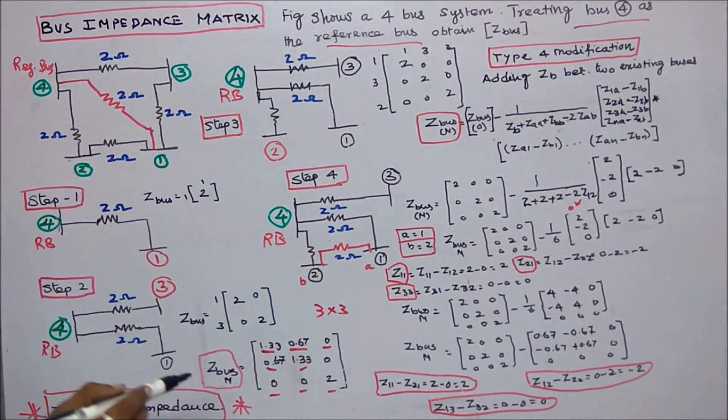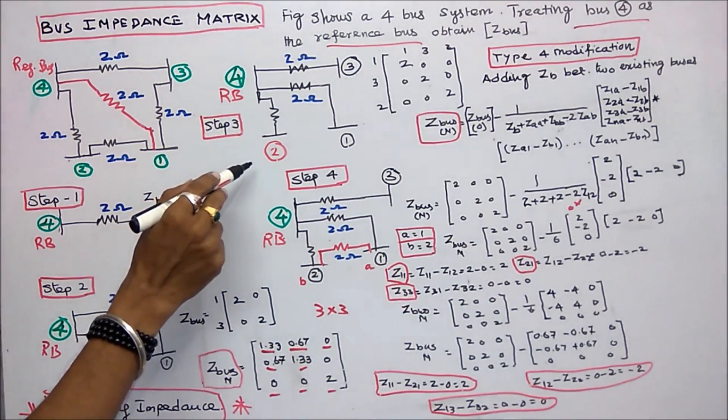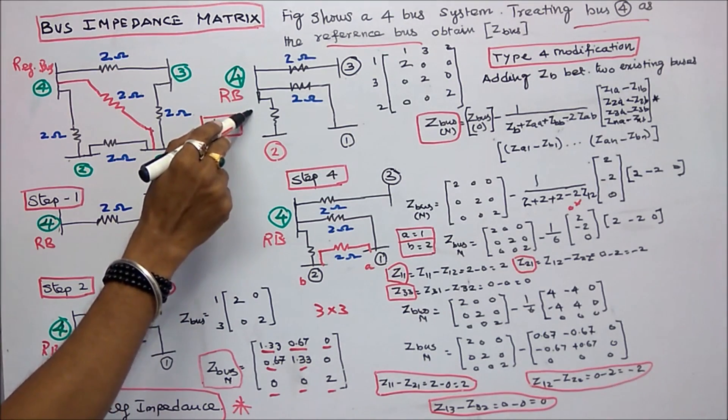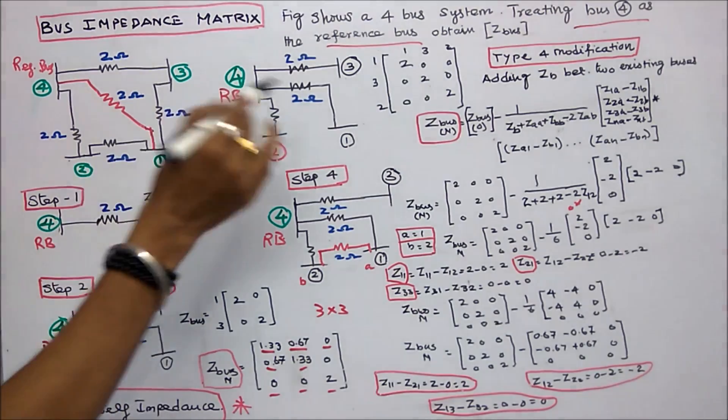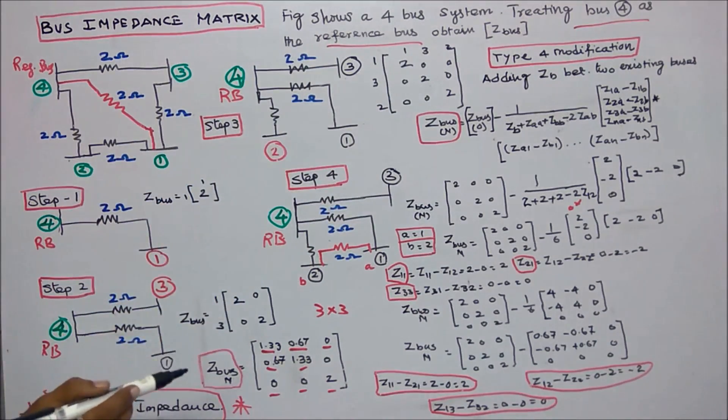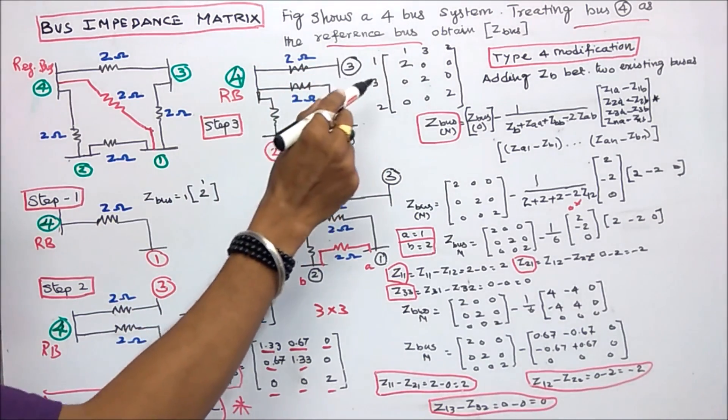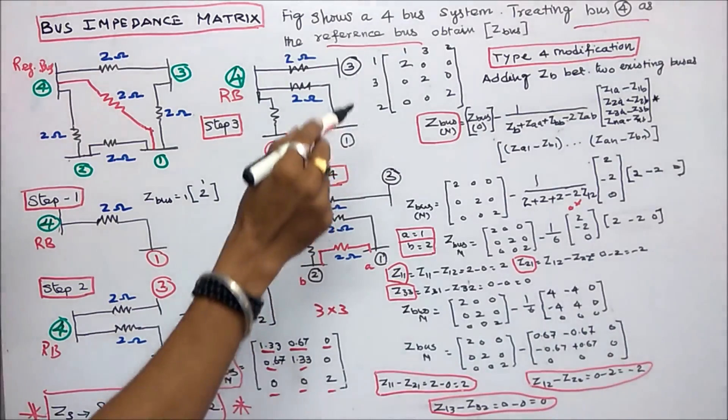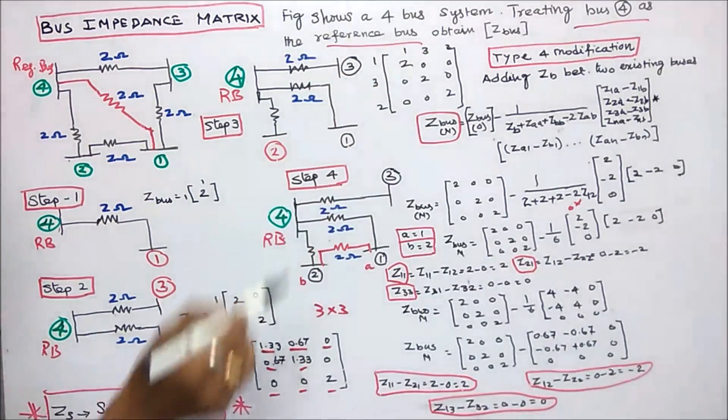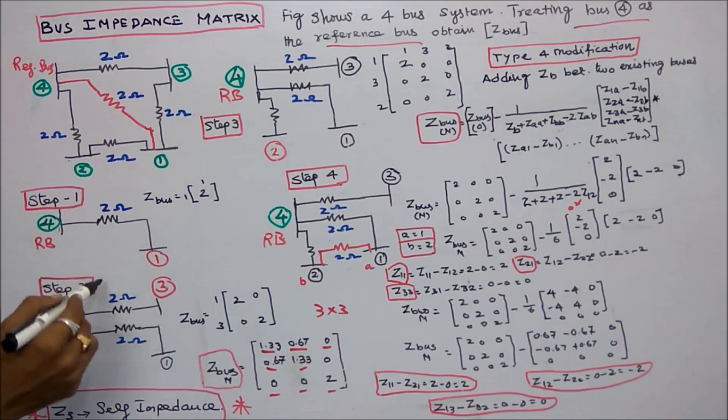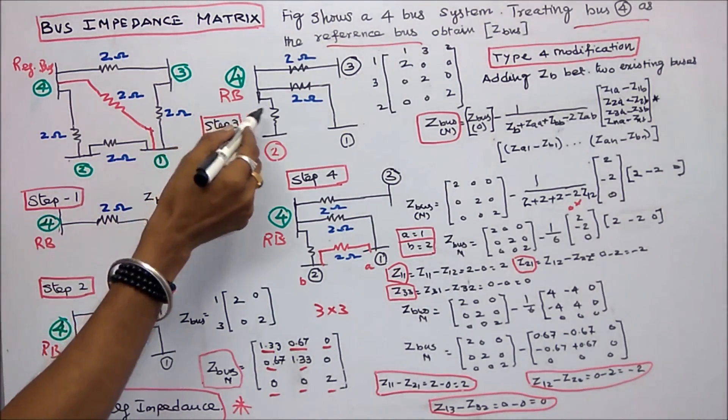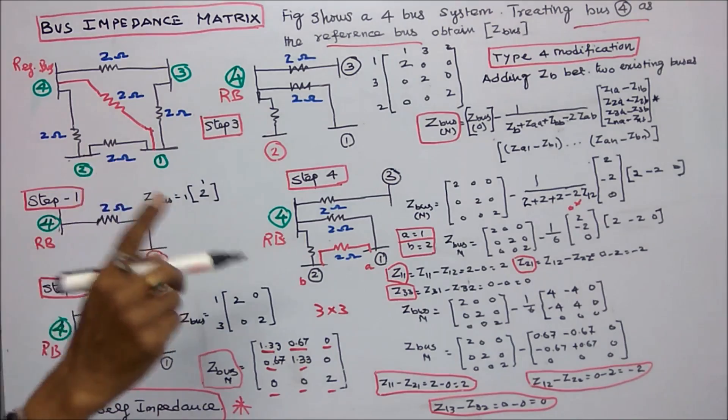Step 3: I am adding new bus 2 to the reference bus 4. Now I got a 3 by 3 matrix. Z11 is equal to 2, Z33 is equal to 2, Z22 is equal to 2. Step 1, Step 2, Step 3 are type 1 modification.